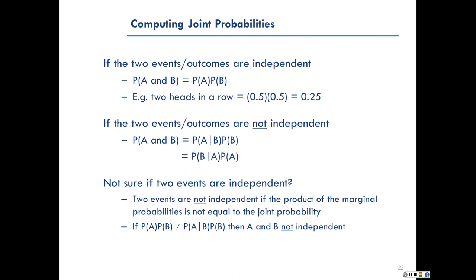Now let's talk about computing joint probabilities. If two events or outcomes are independent of each other, then it's straightforward — the probability of A and B jointly is equal to the product of the marginal probabilities, so the probability of A on its own multiplied by the probability of B on its own. For instance, flipping a coin twice, your probability of getting two heads in a row is 0.5 multiplied by 0.5, giving you a 0.25 chance.